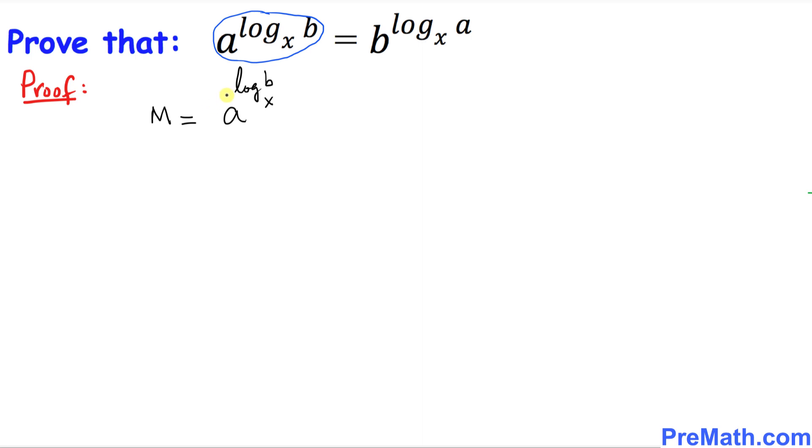The next step is this: I want you to take the log on both sides. I'm going to take log of M on this side and log on this side as well. And now you can see we've got log of a with this whole thing as our exponent or power.